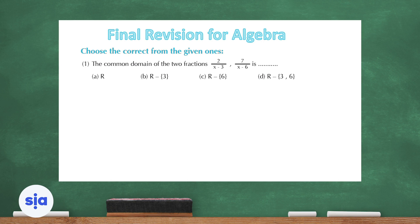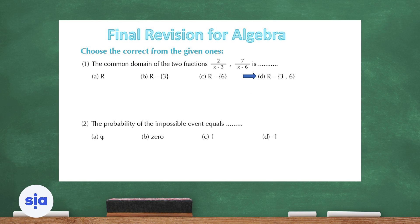Question 2: the probability of the impossible event equals what? The impossible event itself might seem like 5, but the probability of an impossible event is equal to 0.